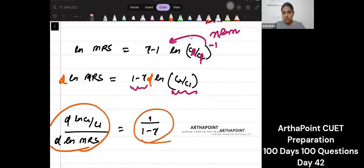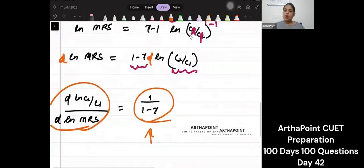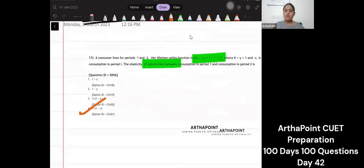So if you notice, yahi pe kar sakte the, this was not even required. Ishi ko C2 by C1 karke, just you could have made this as 1 minus gamma. Just multiply it with negative power. And this is the most common thing. We have already solved these kind of questions. So answer will be both.